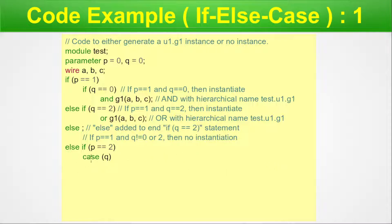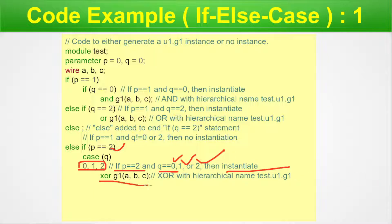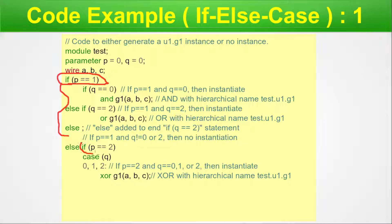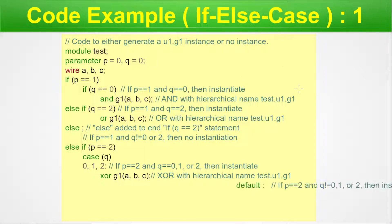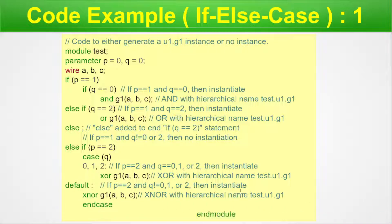For the else-if branch where p == 2, a case statement controlled by q is introduced. For q == 0, 1, or 2, an XOR gate is instantiated. A default case handles q values outside 0, 1, or 2, also instantiating an XNOR gate. End case and end module close the construct. This shows if-else as the outer structure and case nested within for p == 2.